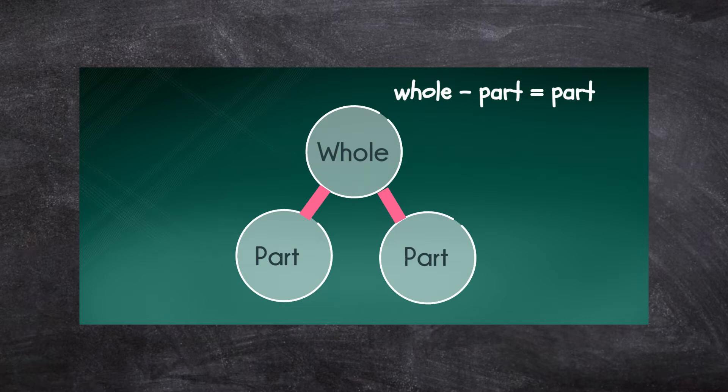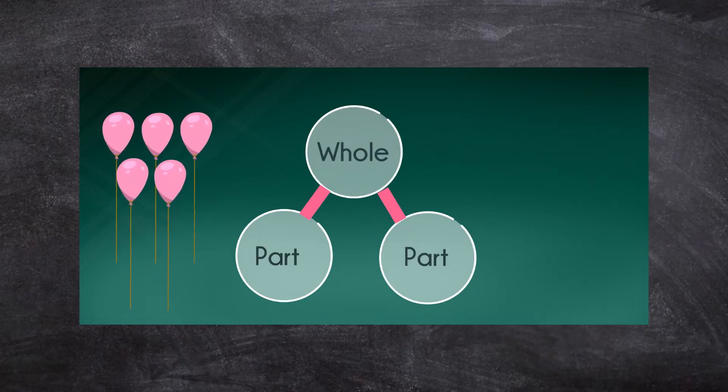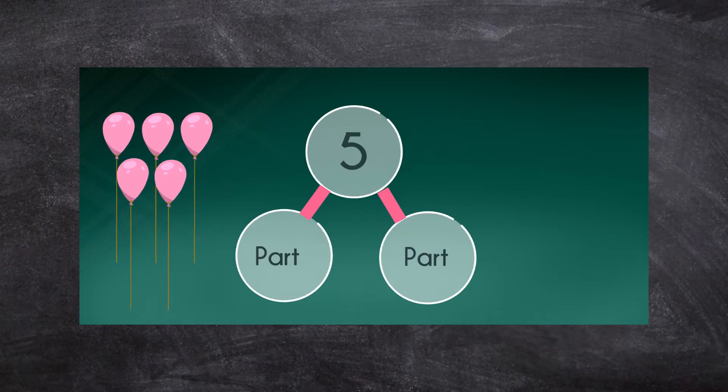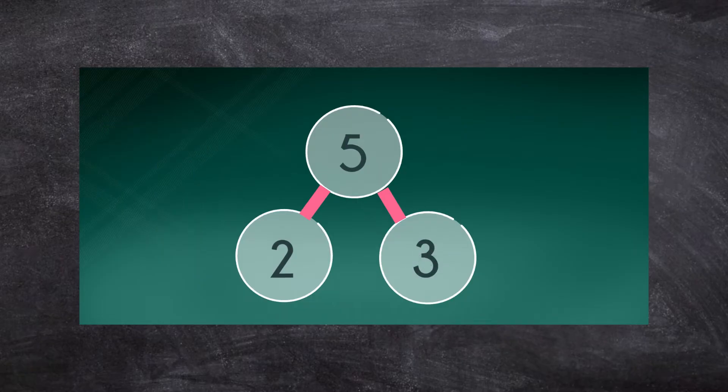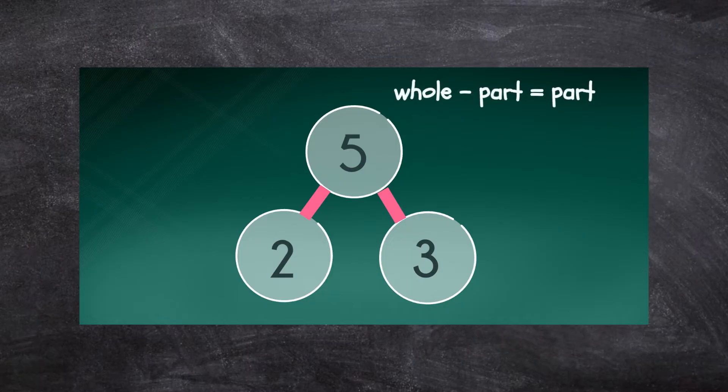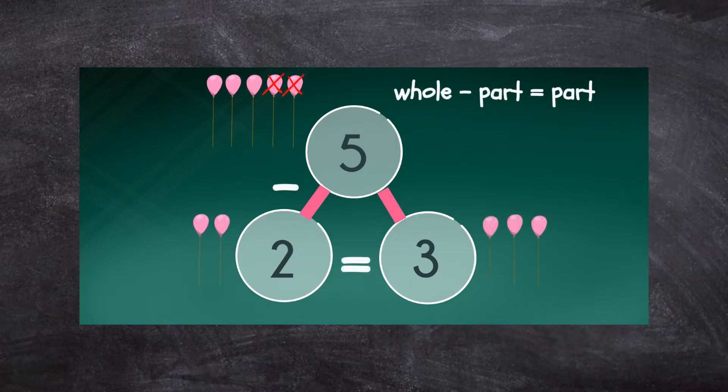Here we have five balloons, so five is our whole number. But what if two of those balloons popped? One of the parts would be two, so it'd be five subtract two. How many balloons do we have left? Three. So three must be my other answer. Let's see this written down: 5 - 2 = 3.